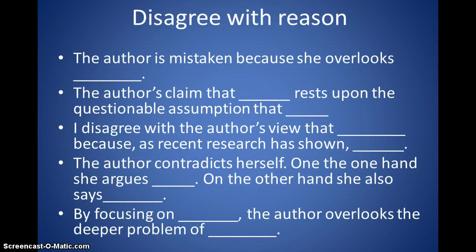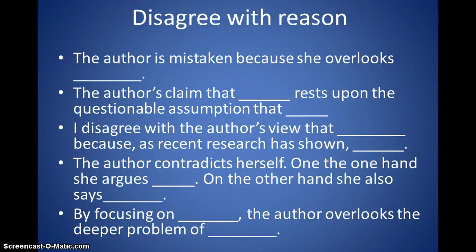Here are some templates you could use. Disagree with reason: the author is mistaken because she overlooks. The author's claim is that blank and it rests upon the questionable assumptions that. I disagree with the author's view because as recent research has shown. The author contradicts herself — on one hand she argues blank, but on the other hand she also says. And by focusing on blank, the author overlooks the deeper problem of blank. All of those are acceptable templates to use in your commentary or assertion statements when you are challenging — opposing, refuting, or arguing — meaning you disagree.